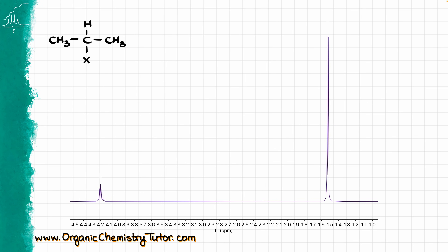The next one is equally as common, and that is the isopropyl group. The hallmark of the isopropyl group is a doublet signal responsible for six hydrogens, and a big multiplet on the left side responsible for only one hydrogen. Technically, that multiplet is a septet — it has seven peaks. However, depending on the quality of your spectrum and the strength of the instrument, it may or may not show as a septet, so it is safer to call it a multiplet. If you have a good quality spectrum, you will typically be able to see a septet there.